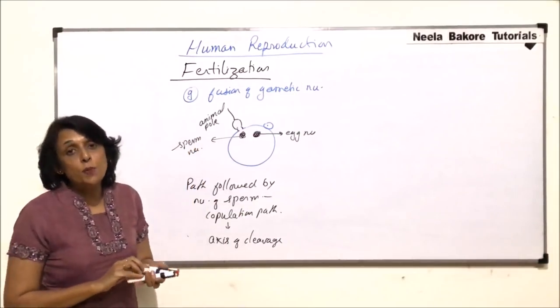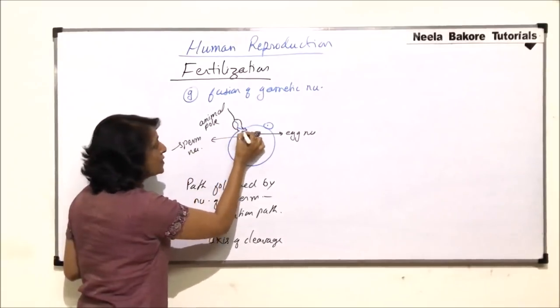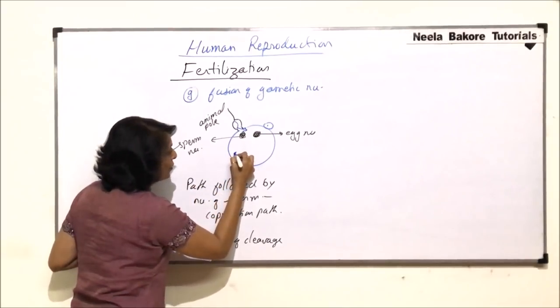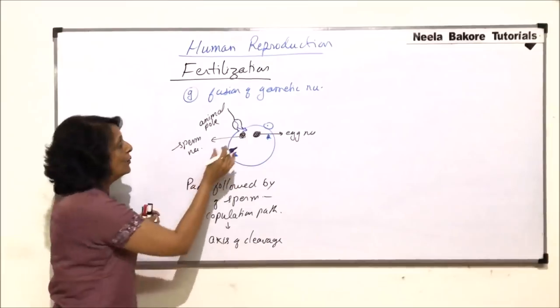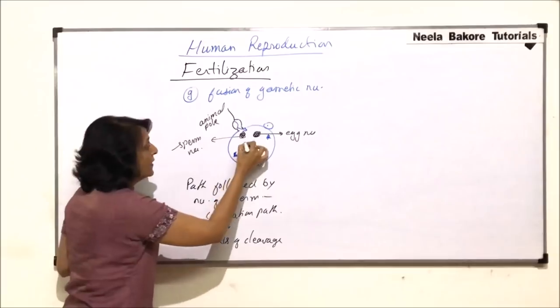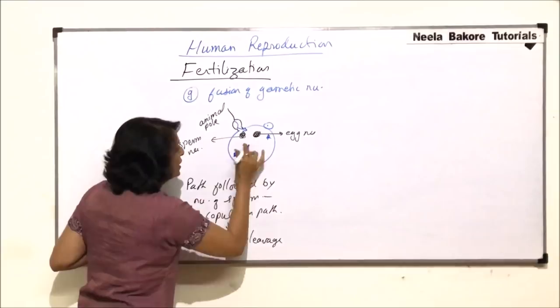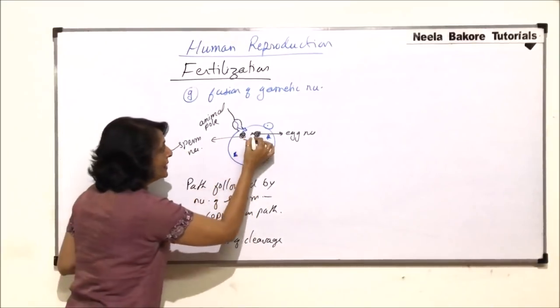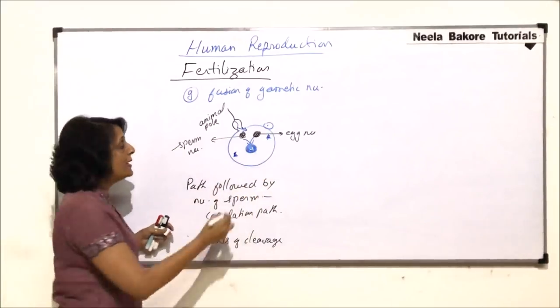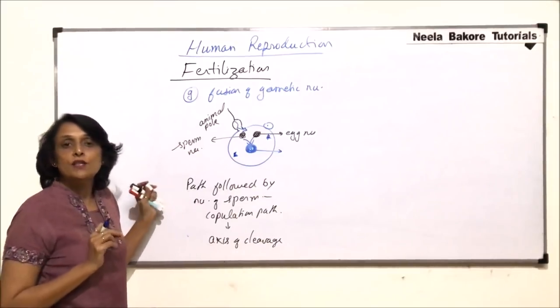The centriole of the sperm which enters goes to the poles. That means here the centrioles would be, and now these nuclei, their nuclear membranes are going to dissociate. The chromosomes will come on the plane and here they will fuse. So let me show this by an arrow. These chromosomes come here and they fuse. That means now a diploid chromosome containing nucleus is formed.